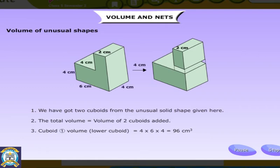Cuboid 1 volume, lower cuboid, is equal to 4 into 6 into 4, that's equal to 96 cm cube.